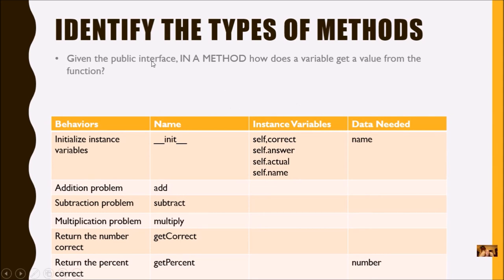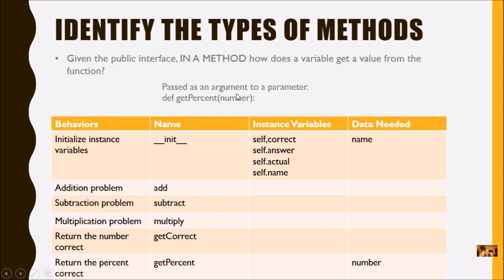In a method, how does a variable receive a value from the function? It goes to the parameter. In the method definition, the parameter receives the value from the argument. Just be careful with the question — when talking about a method, it's the parameter; when talking about the function, it's the argument.